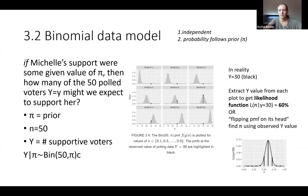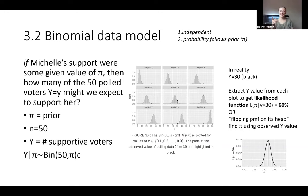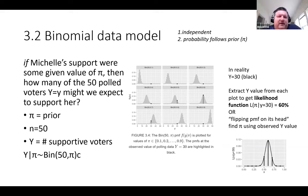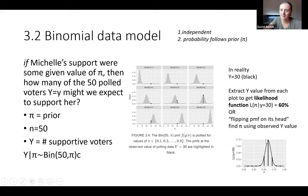I liked that quote because it turns things on their head. Probability is making a model to fit the data, and then we're going to flip that — likelihood is the data fitting the model. So using our observed value of 30 to find the likelihood of pi, the likelihood of supporters.